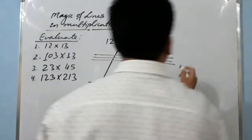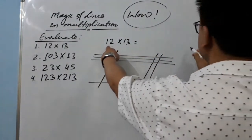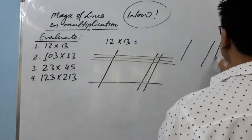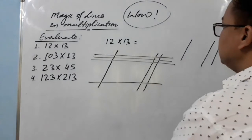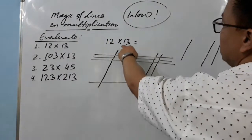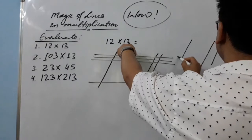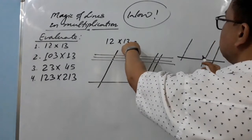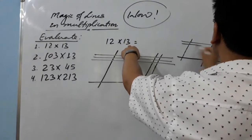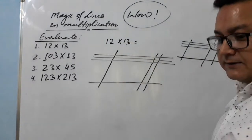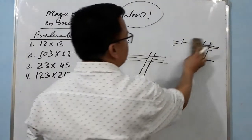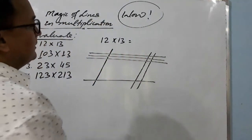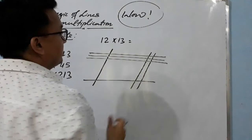Let me explain once again. You start from the left side: draw one line for the '1', then leave some space and draw two lines for the '2'. Then start from the bottom: leave some space, draw one line for '1', and three lines for '3' down here. Now it's clear how to draw the lines. Next, how to find the result.